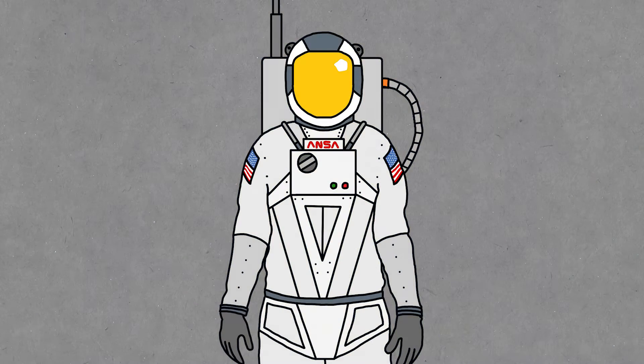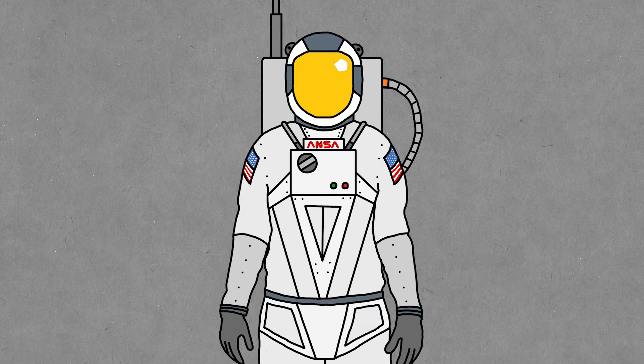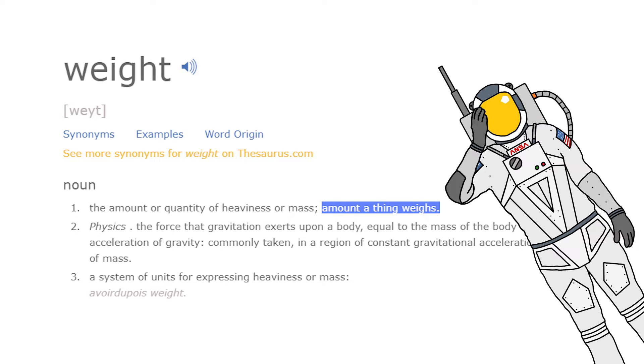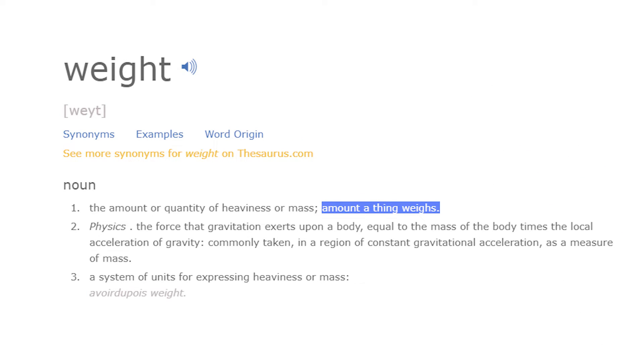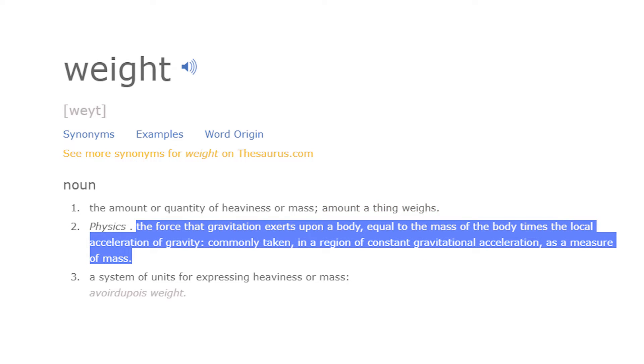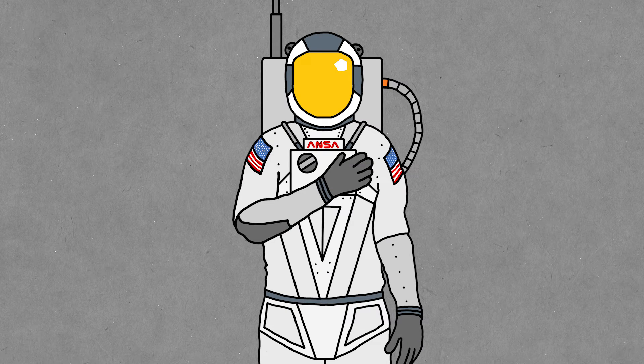And again, I'll take a moment to clear something up here. There is some debate about what to call weightlessness. Depending what dictionary you use, weight can be described as everything from mass to how much something weighs. Real informative, dictionary.com. In physics though, weight has a much more specific definition, which I'll read verbatim: Weight is the force that gravitation exerts on a body equal to the mass of the body times the local acceleration of gravity, commonly taken in a region of constant gravitational acceleration as a measure of mass. So what that definition is saying is that we usually take mass and weight to mean the same thing, but this is only because we live in a relatively constant gravitational field.